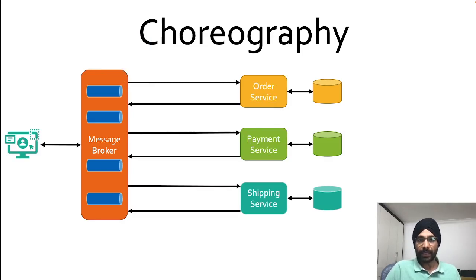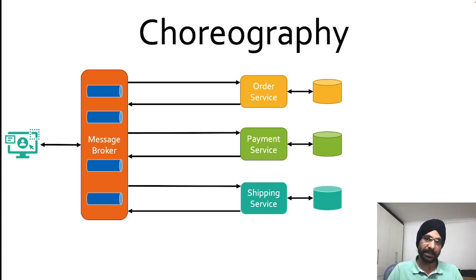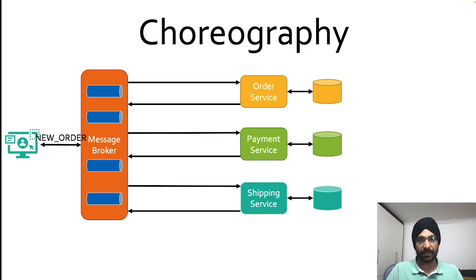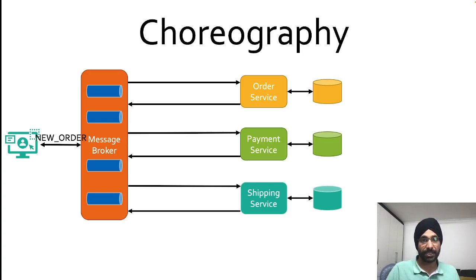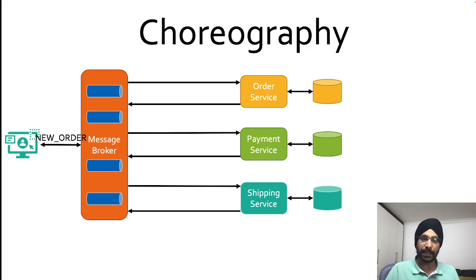Let's take a quick example. We have three services: an order service, a payment service, and a shipping service. So how do you really implement this design pattern? Our client will publish a first event saying 'new order'. The client can publish this event on the message broker on some specified queue or topic, or send it directly to the order service. In this example, let's say the client is writing directly to the message broker.